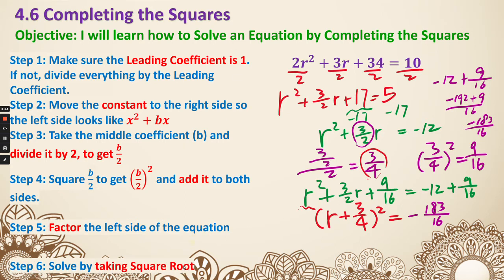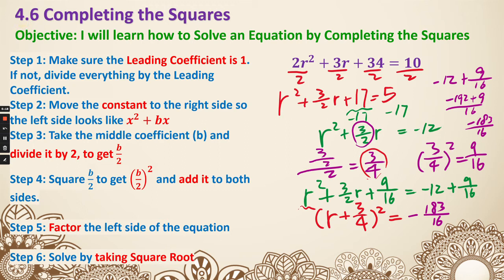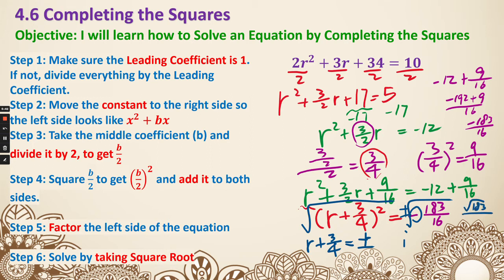Last step: solve the equation by taking the square root of both sides. So we have r plus 3 fourths equals plus or minus the square root of negative 183 over 16. Since there is a negative sign, that guarantees an imaginary unit i. The square root of 183 is on top, and the square root of 16 is 4 on the bottom. Finally, subtract 3 fourths from both sides to get r equals negative 3 fourths plus or minus square root of 183 over 4, times i.